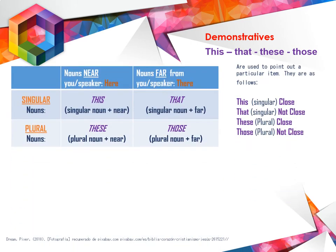Para la parte inicial tenemos demostrativos, los cuales son this, that, these, and those. Los demostrativos vienen en singular y plural. Los singulares son this and that. Los plurales son these and those.